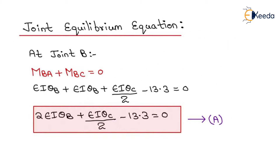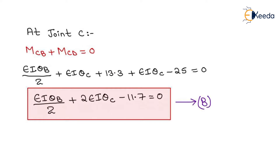We now apply joint equilibrium. At joint B, the net moment equals zero, so MBA + MBC = 0. Substituting: EIθB + EIθB + EIθC/2 − 13.3 = 0 — this is Equation 1. At joint C, MCB + MCD = 0. Substituting: EIθB/2 + EIθC + 13.3 + EIθC − 25 = 0, giving EIθB/2 + 2EIθC − 11.7 = 0 — this is Equation 2.